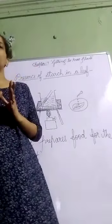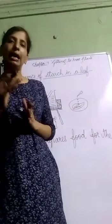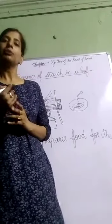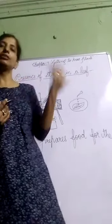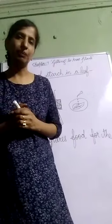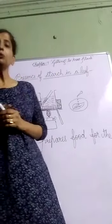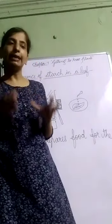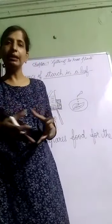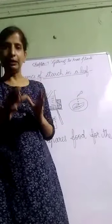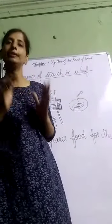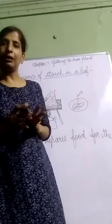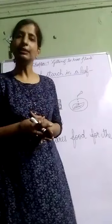Root plays a very important role in the plant. It absorbs water and minerals from the soil, and these are then transported to all parts of the plant by the stem. Root also anchors the plant firmly into the soil — it fixes the plant in the soil and keeps it tightly bound.